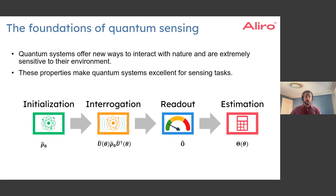Using the data that you get by repeating this process many times, you are able to estimate a parameter with high precision. Note that this is a process that you don't usually run once — you usually run it many times, but sensing processes like this can usually run very, very quickly, allowing you to accurately collect lots of data and process it.